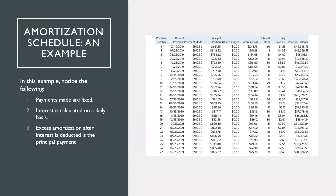After paying for the interest first, the excess of the monthly fixed payment will then be allocated towards the principal. You will notice that as you go along the payment term, at the early stages of an amortization, we can assume that we are first prioritizing the payment of interest. Once the interest payments are sufficiently covered, the payment is then allocated subsequently to the principal.